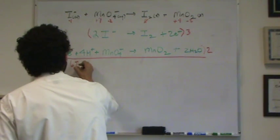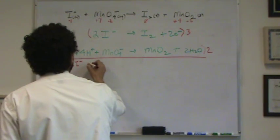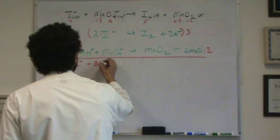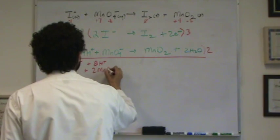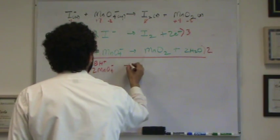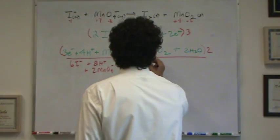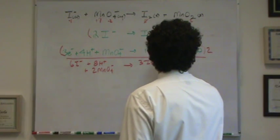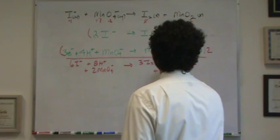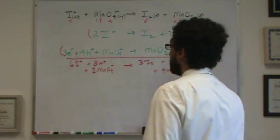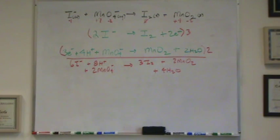Now I'll write down everything. 6I- plus 8H+ plus 2 permanganate ions. That goes to 3I2 plus 2 manganese dioxide plus 4 waters. There's my reaction. If I put in the state symbols, I'd be done for the acidic conditions. I'm doing it in basic.